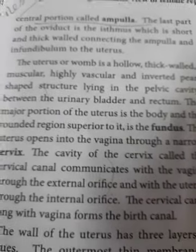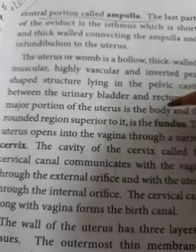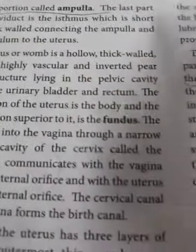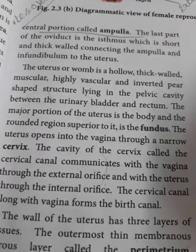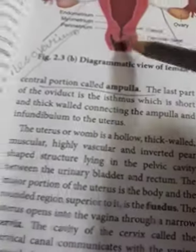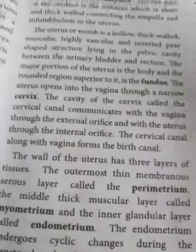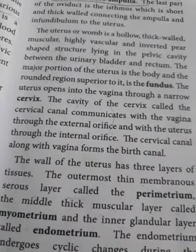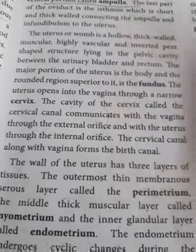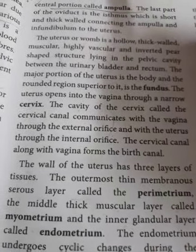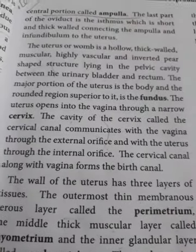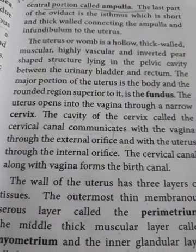The major portion of the uterus is the body, and the upper rounded part is called the fundus. The uterus opens into the vagina through a narrow cervix. The cavity of the cervix is called the cervical canal, which communicates with the vagina through the external orifice and with the uterus through the internal orifice. The cervical canal along with the vagina forms the birth canal.